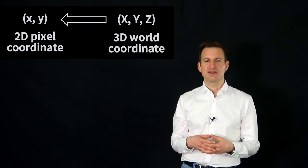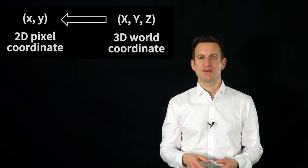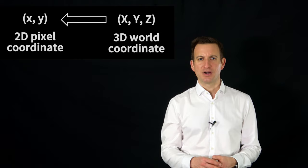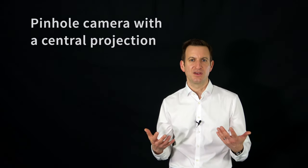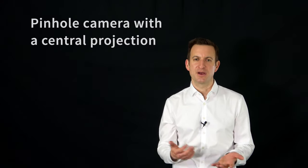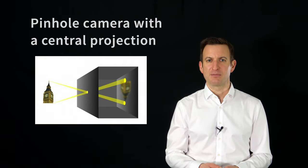So I want to explain in detail how this transformation actually looks like that we can use in order to describe how a point with an X, Y, and Z coordinate in some world reference frame can be mapped onto a camera image resulting in an x, y pixel coordinate. We assume here we have a camera that follows the central projection, which is a typical model that we use in order to describe cameras. It's actually one of the simplest models, following a so-called pinhole camera model.